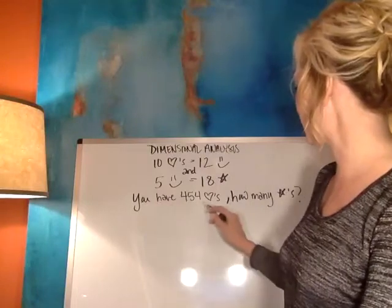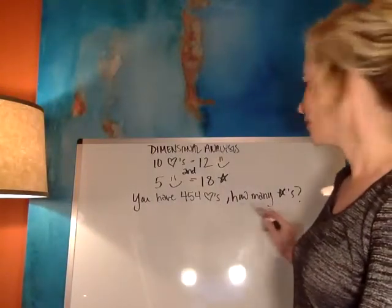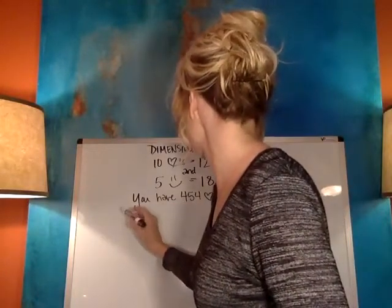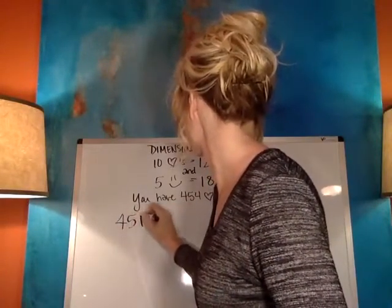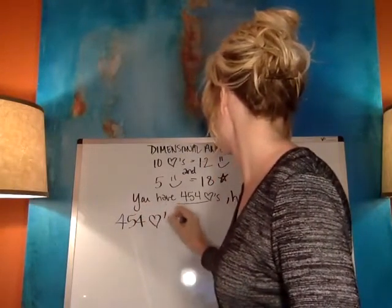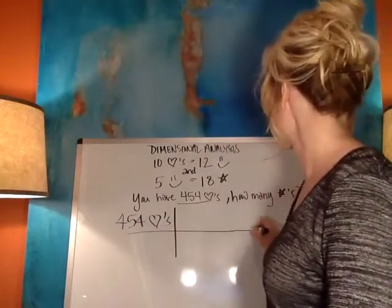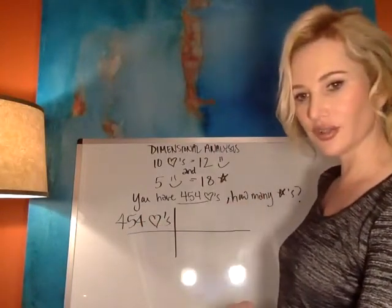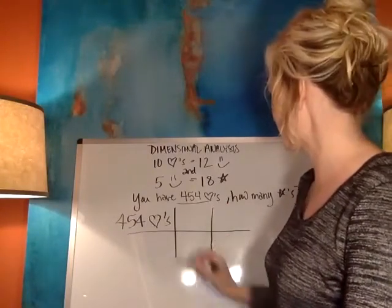The question is: you have 454 hearts — how many stars do you have? You start with what you're given, which is 454 hearts. You always start with what you're given, so you don't even have to think about the numbers — just look at the units. We have two equivalents, so we're going to do a two-step calculation. I'm going to go ahead and set up my train tracks to look like this.